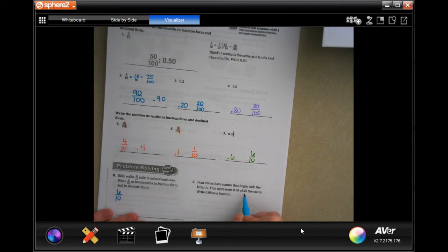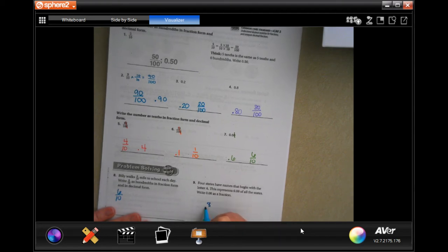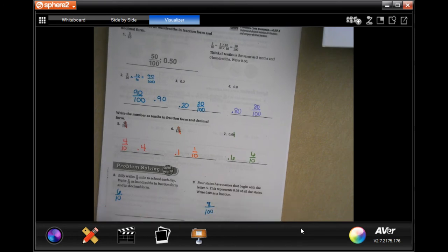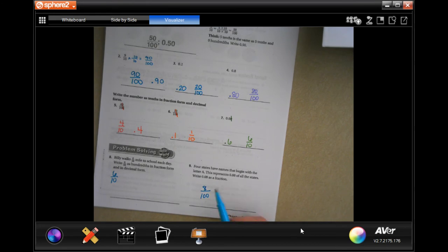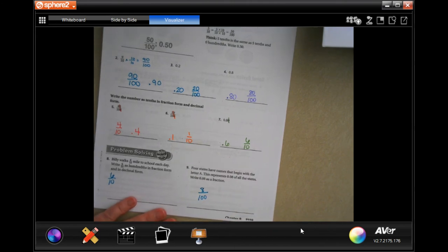This represents 0.08 of all the states. This one's a little bit different because it doesn't give you a zero as the last number, but that eight is still in the hundredths place, so it's 8 over 100. They're trying to trick you by not giving you one that ended in zero, but eight is in the hundredths place.